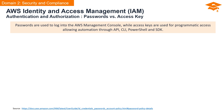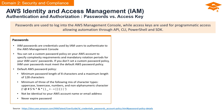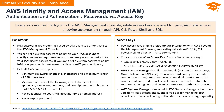In IAM, passwords serve as a key to the AWS Management Console, while access keys play a pivotal role in programmatic access, allowing automation through APIs, CLI, PowerShell, and SDKs. You can set a custom password policy specifying complexity and rotation requirements. The default AWS password policy includes a minimum length of 8 characters, a maximum of 128 characters, a mix of character types, and must not match the AWS account name or email. Passwords never expire. Access keys comprise an access key ID and a secret access key, used for programmatic access through AWS SDKs, CLI, PowerShell, or direct HTTPS calls.